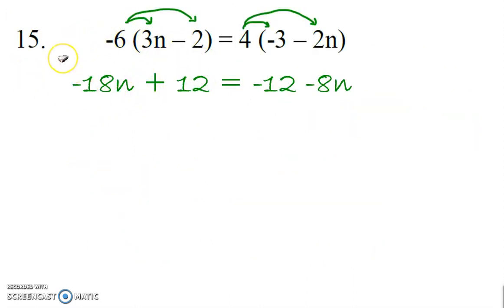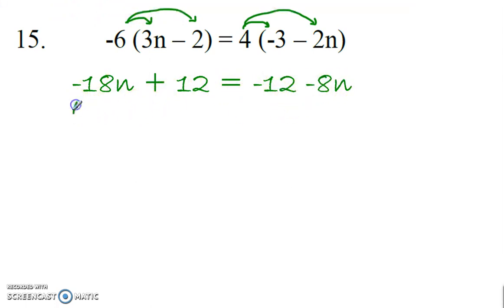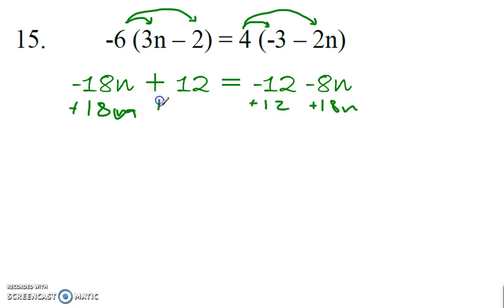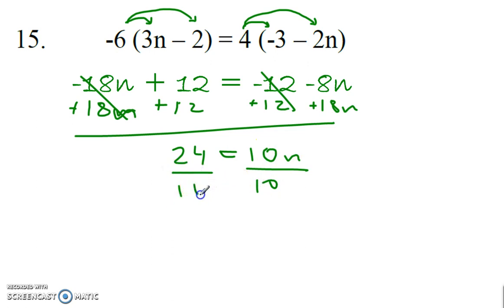Distributive property here gives us negative 18n plus 12 is equal to negative 12 plus 8n. We're going to move the 12 to the other side, and then move the 12n to the other side. That gives us 24 is equal to 10n. Divide by 10 on each side, and n is 2.4.